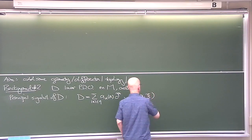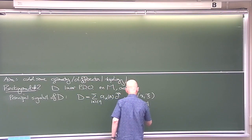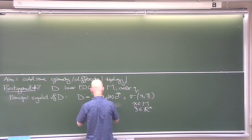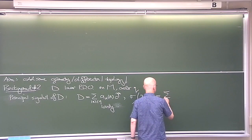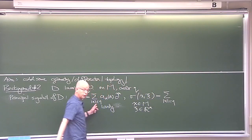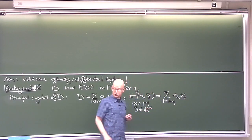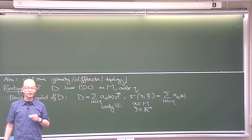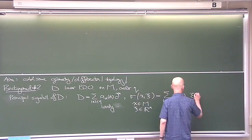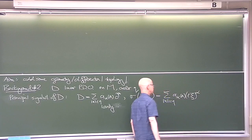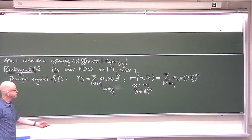If D is an operator of order Q, maybe written in local coordinates, then the principal symbol sigma is a function of two sets of variables: the points on M and, locally, cotangent vectors xi. To define the principal symbol, you forget about all terms of lower order, keep only the terms of top order, keep the coefficients, and replace each derivative d/dx_i by the linear function xi_i. For small technical reasons, it's best to multiply by the square root of minus 1. That's the local recipe to construct a function from an operator.